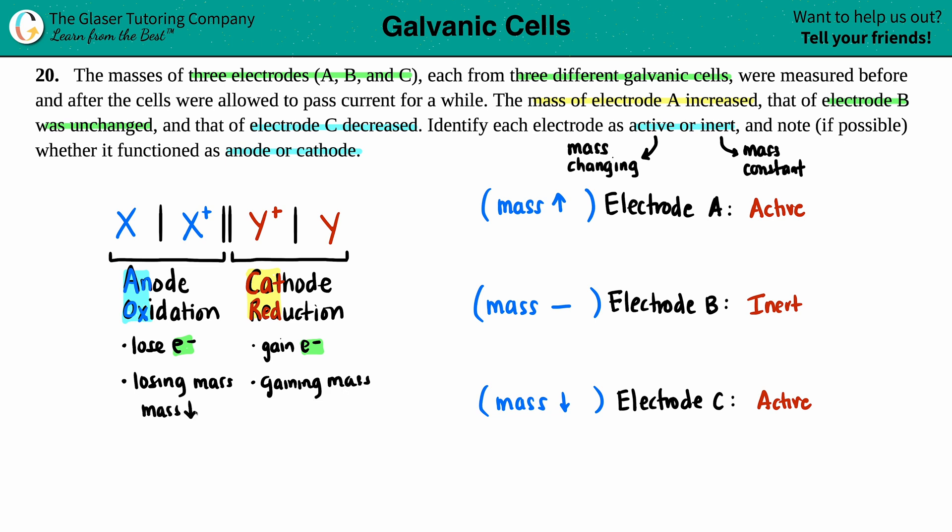So if you're losing mass, your mass is going to drop. If you're gaining mass, your mass is going to increase. So in electrode A, since clearly the mass was increasing—mass increasing, gain of mass—that's reduction, that happens at the cathode. So this is going to happen at the cathode.